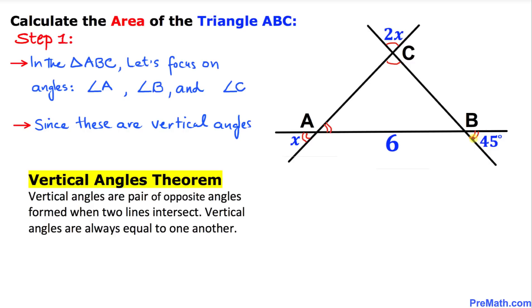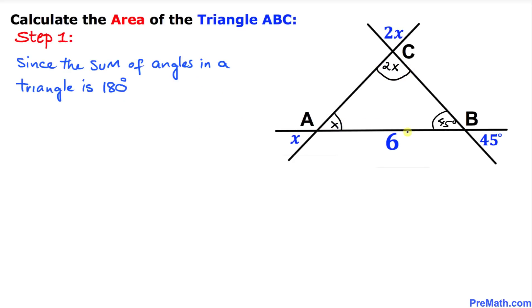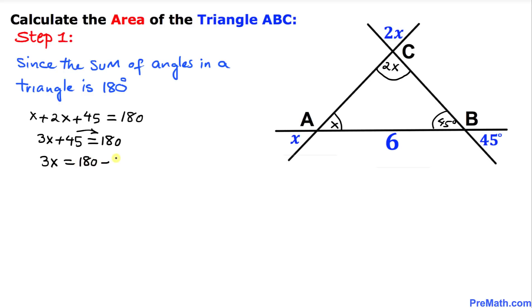Finally, angle B is going to be equal to this angle. So therefore, this angle is going to become X, this angle is going to become 45 degrees, and angle C is going to be 2X. We know that the sum of the angles of a triangle is always equal to 180 degrees, so let's write down: X plus 2X plus 45 equals 180 degrees. Simplifying gives us 3X plus 45 equals 180 degrees.